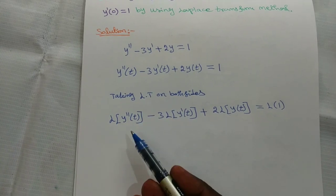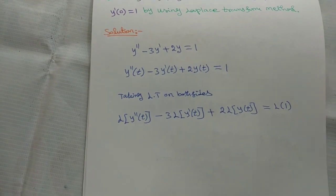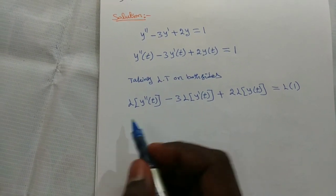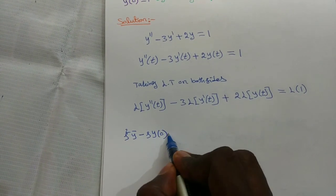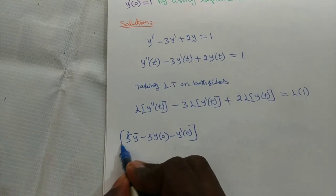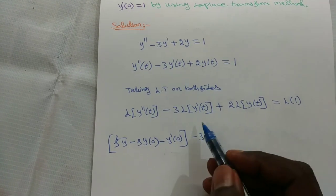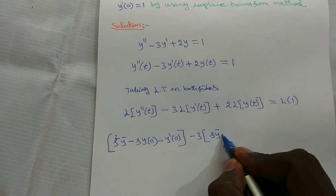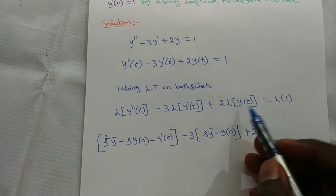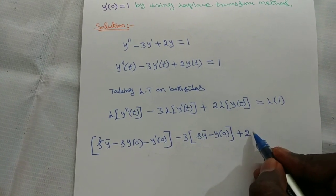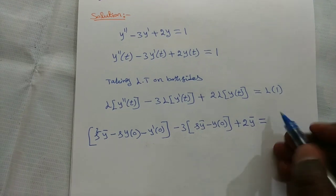Applying the formulas: L of y double dash of t equals s squared y bar minus s y of 0 minus y dash of 0; minus 3 times L of y dash of t equals s y bar minus y of 0; plus 2 times L of y of t equals 2y bar; equal to L of 1 which is 1 by s.